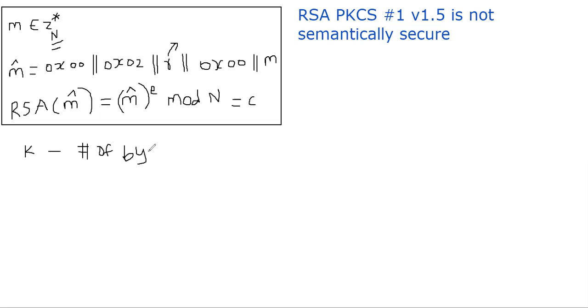Suppose you have a long message. You can have 11 bytes for these things that are prefix of the message. Let us assume k denotes the number of bytes of n. So in order to represent, for example, if n is a 2048-bit number, we would need 256 bytes. Number of bytes to represent n.